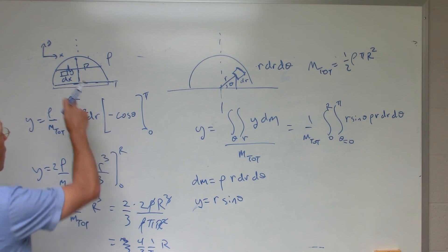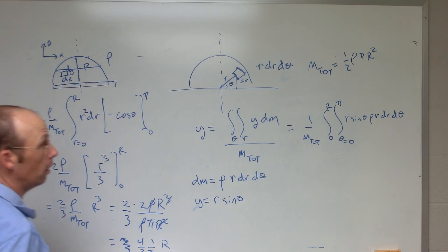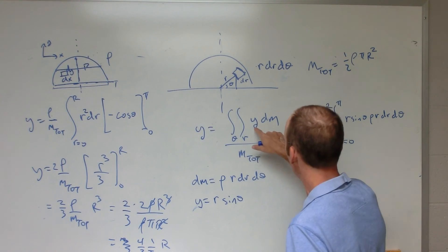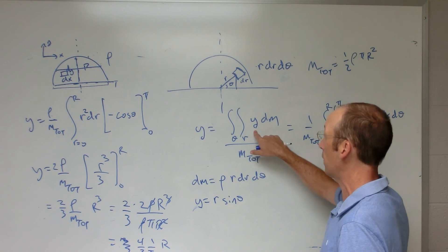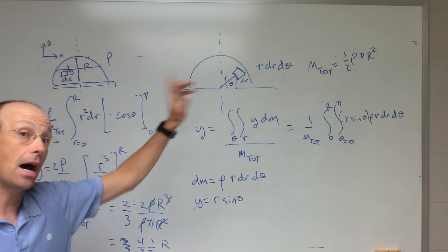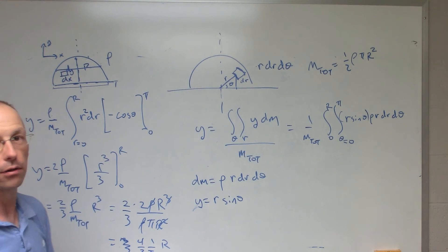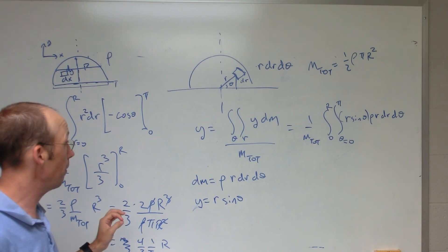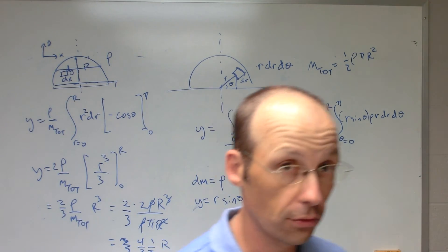You can do the same thing if you want to do the x center mass. What would you change? Well, instead of using y, you did the exact same thing with x. So this wouldn't be r sin θ. It might be something different, and I'm not going to tell you what it is, but you might want to do that. So there's one example of finding the center of mass for a half-circle thingy.